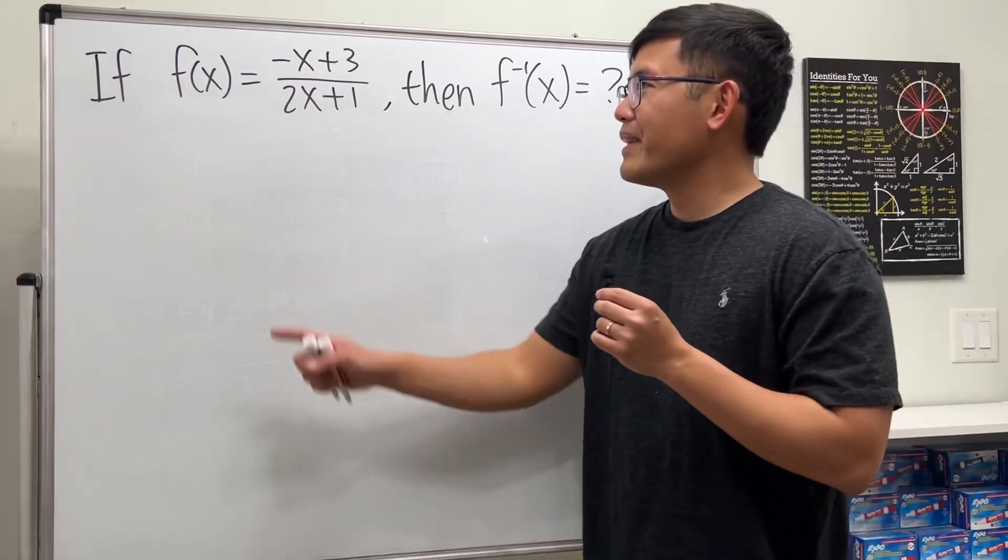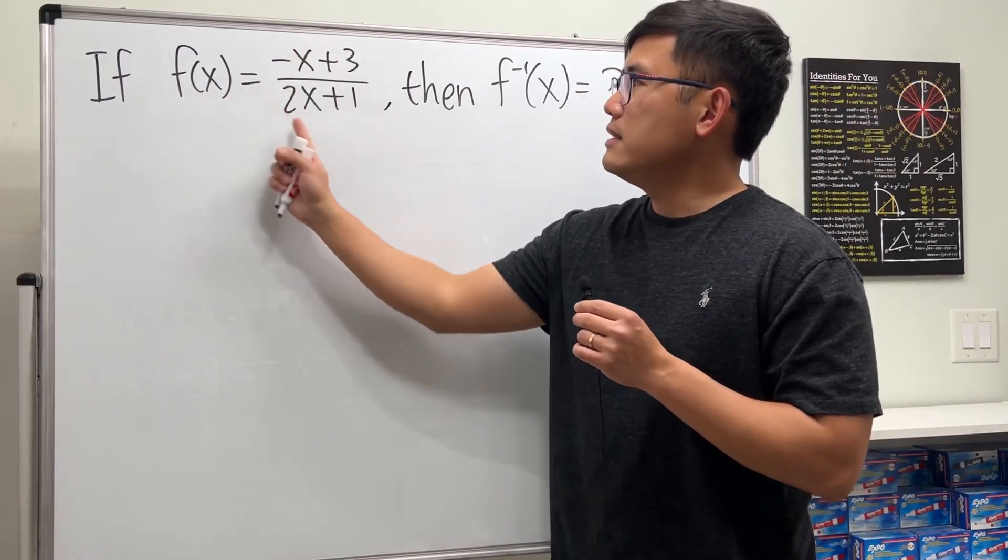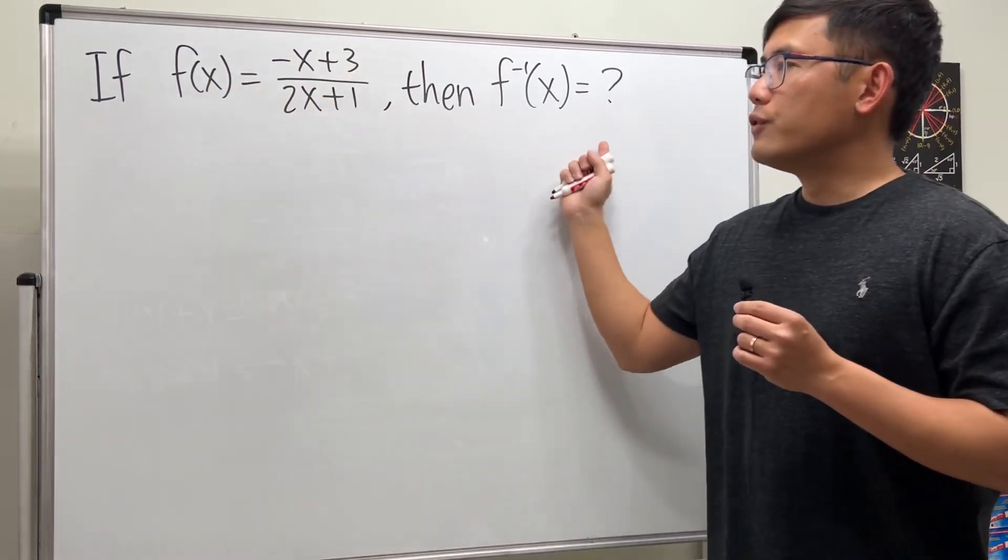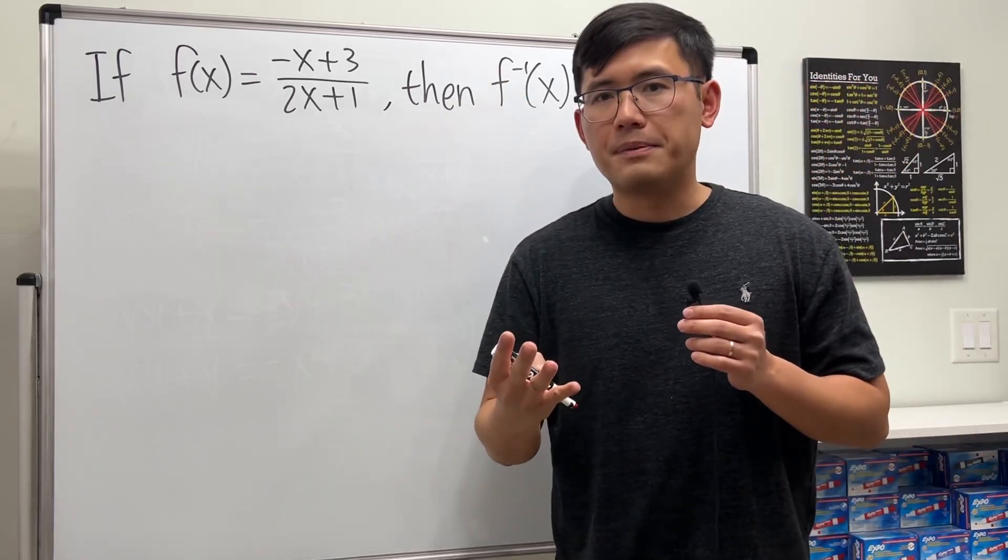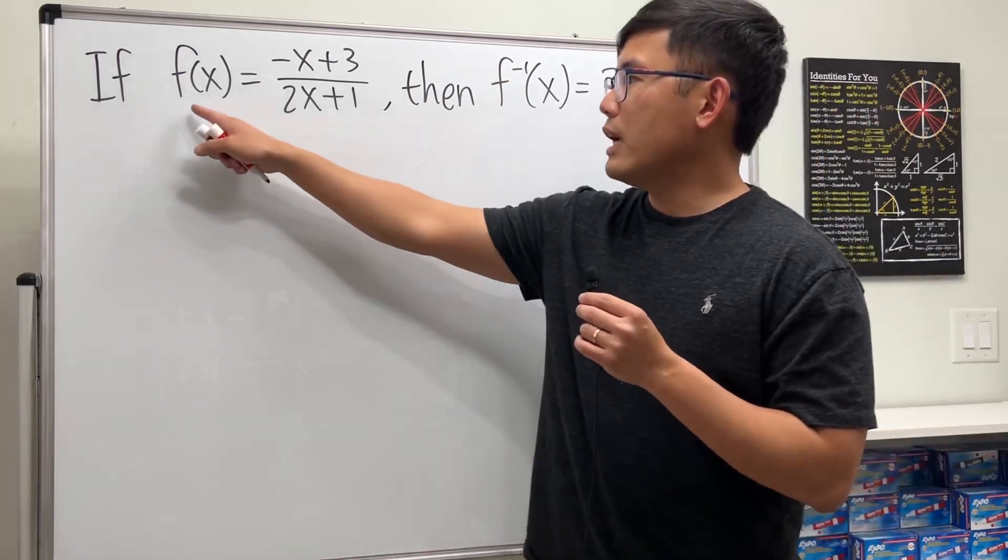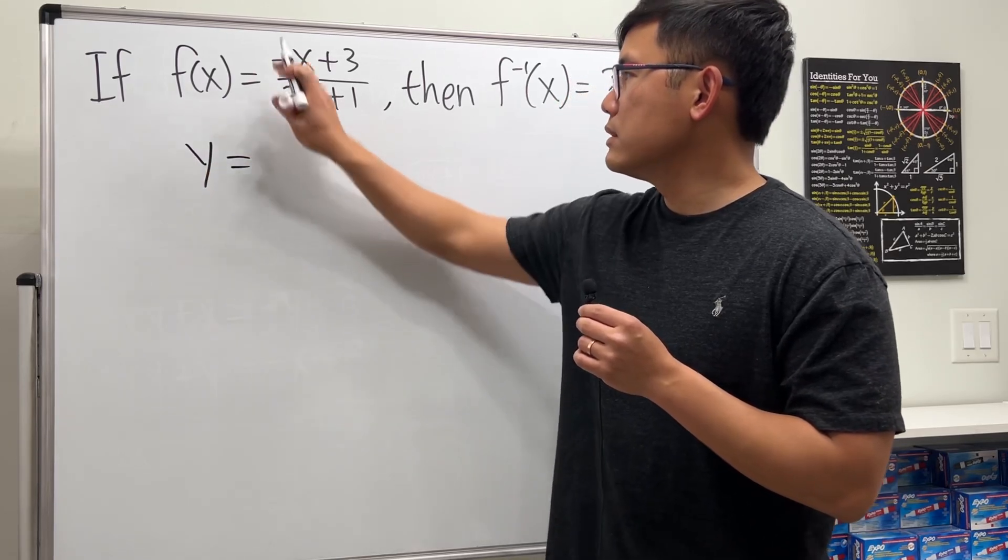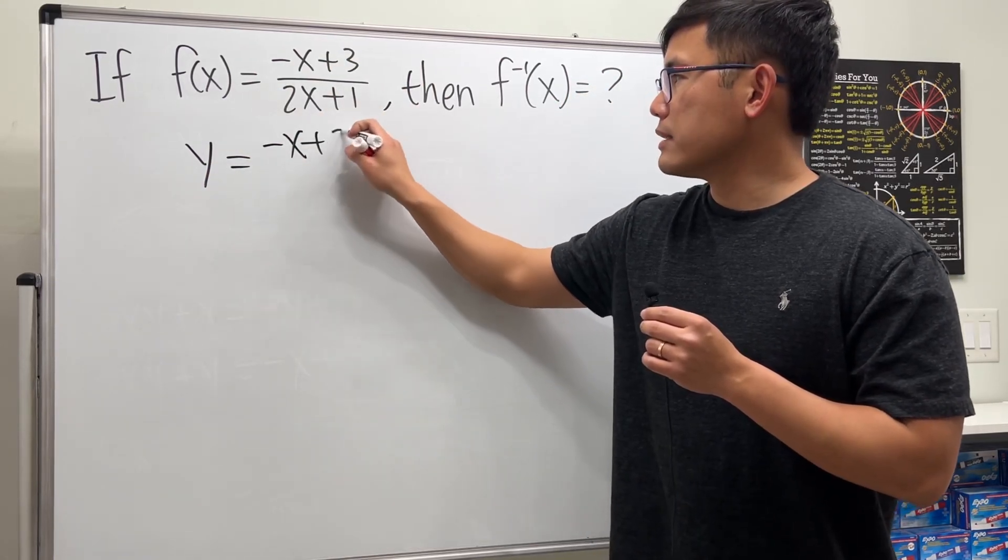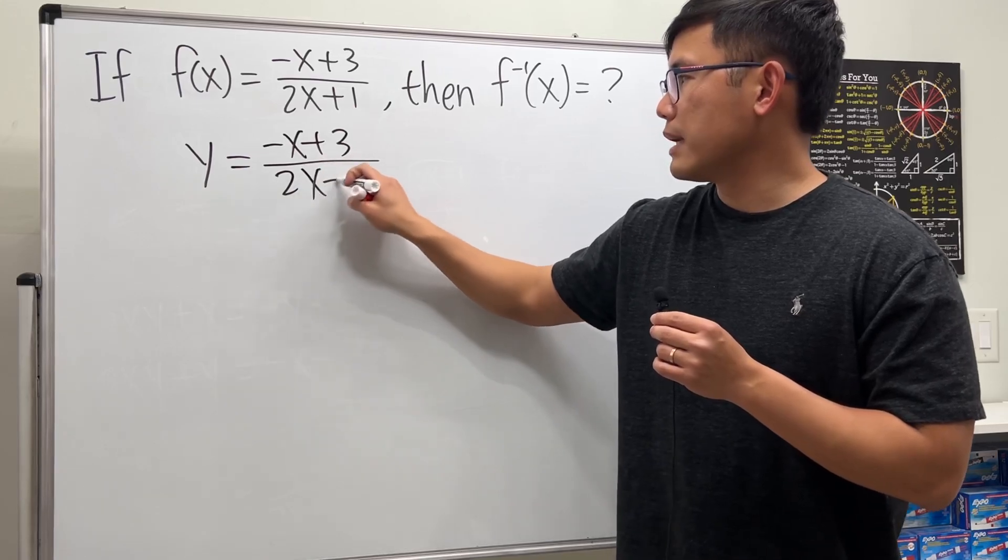Our f(x) is this rational function, and to find the inverse we follow the four steps. The first step is we write f(x) as y. So we have y equals negative x plus 3 over 2x plus 1. That's the first step.